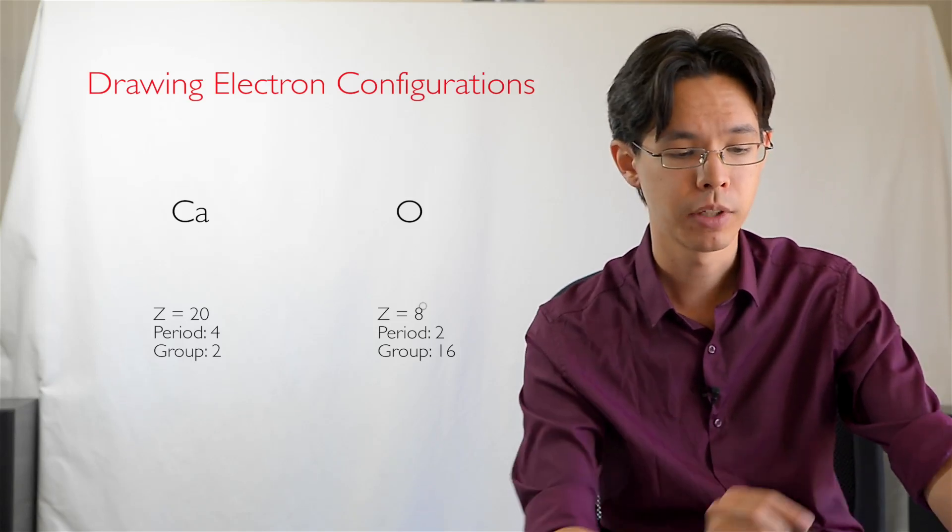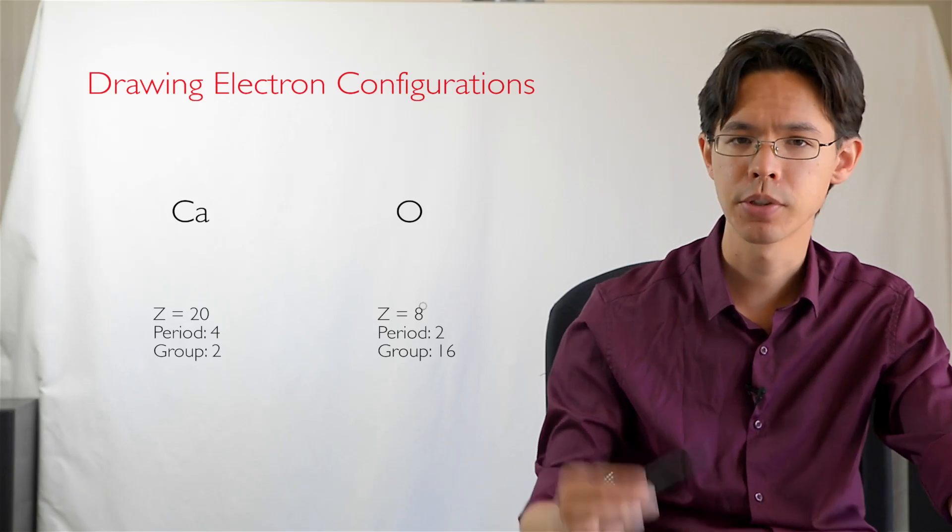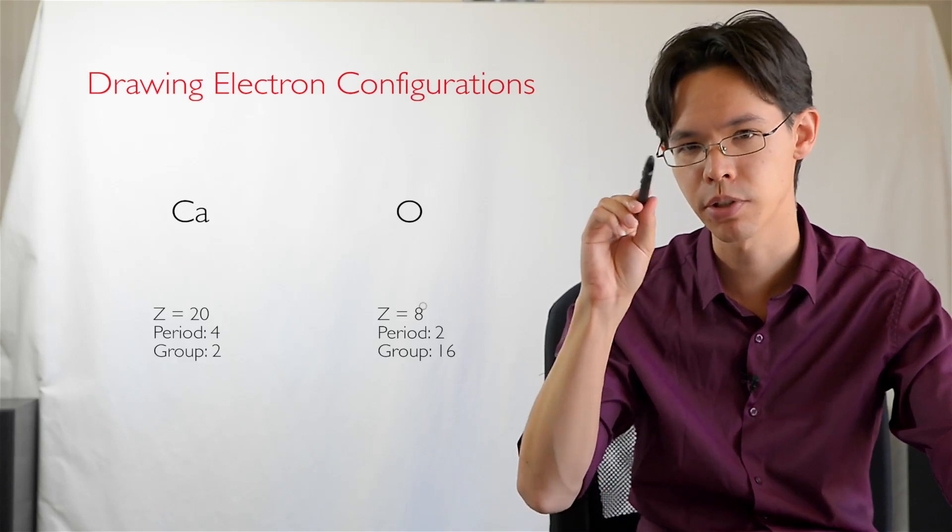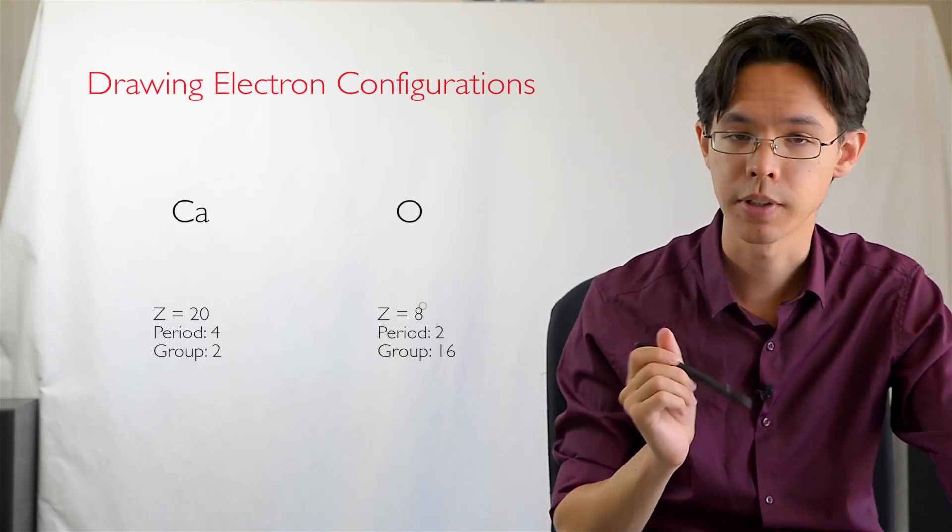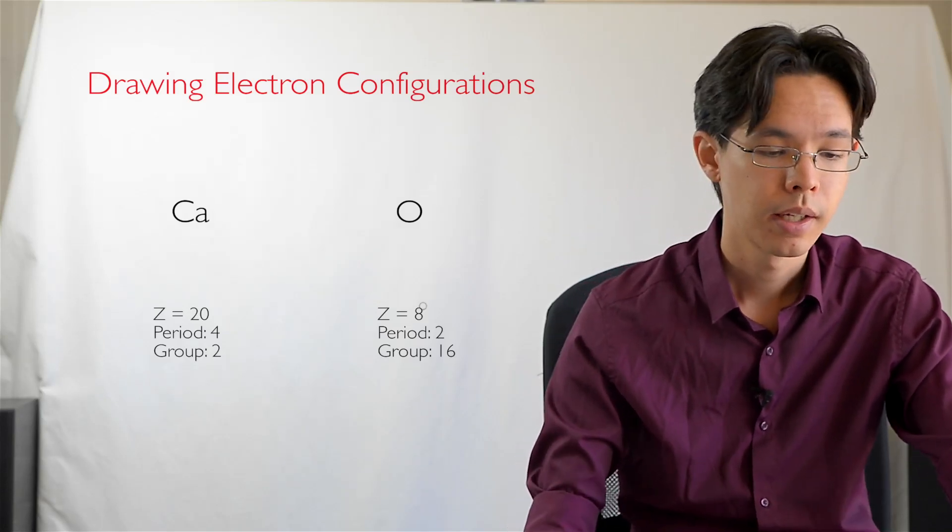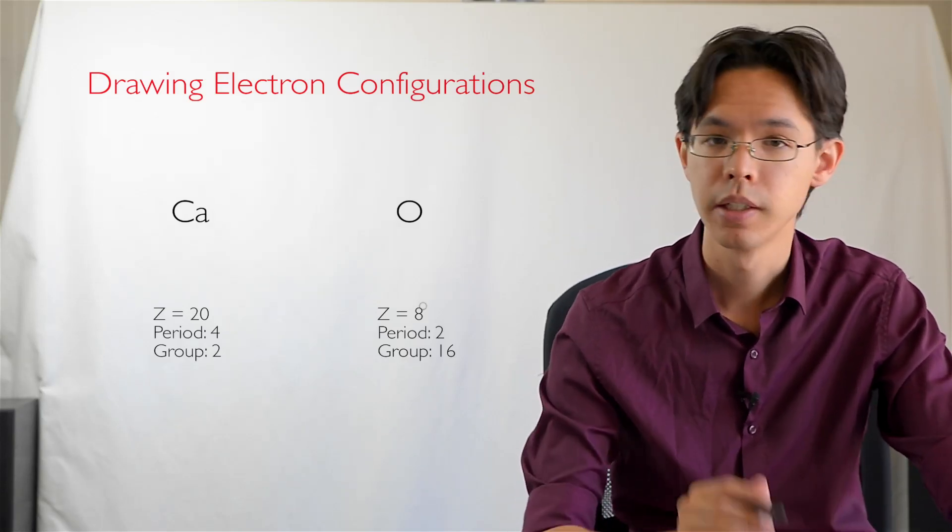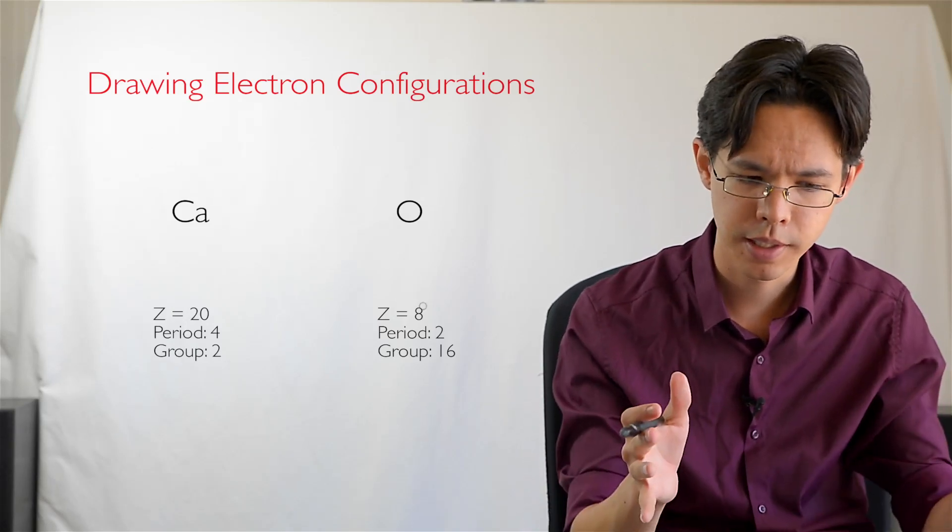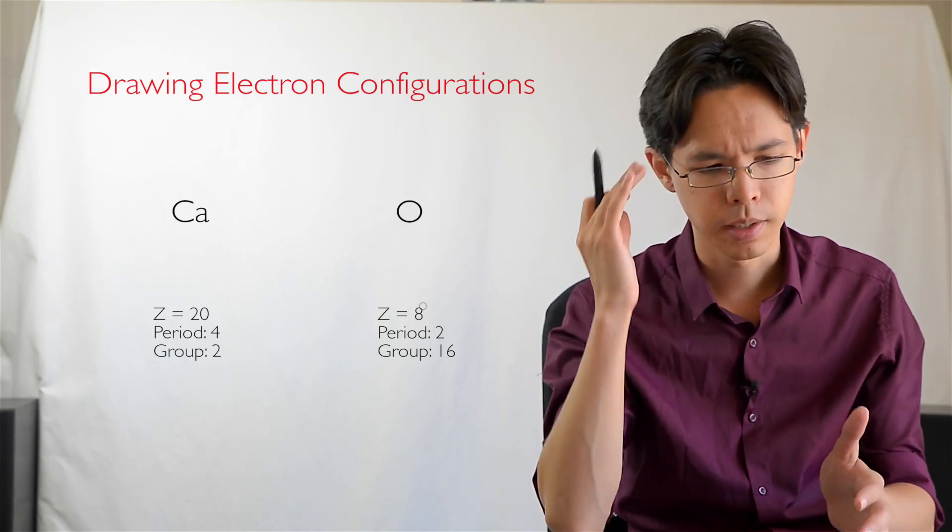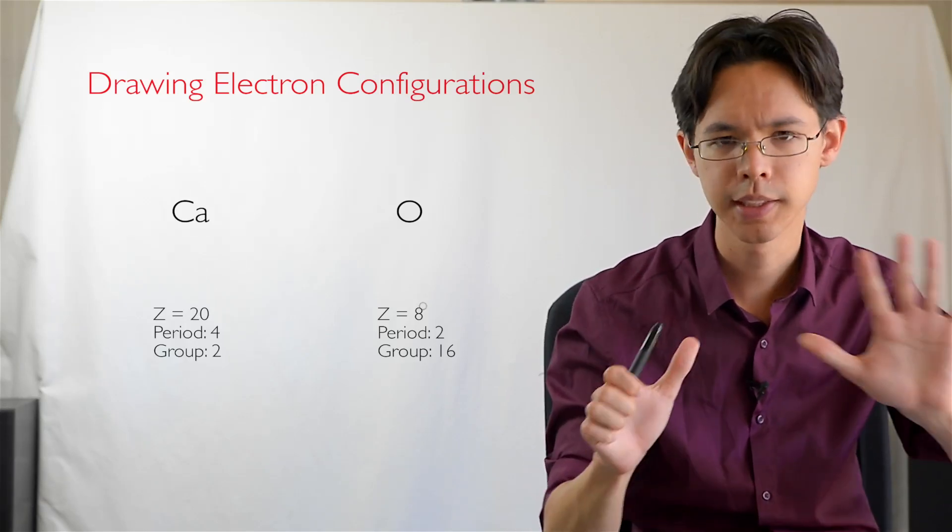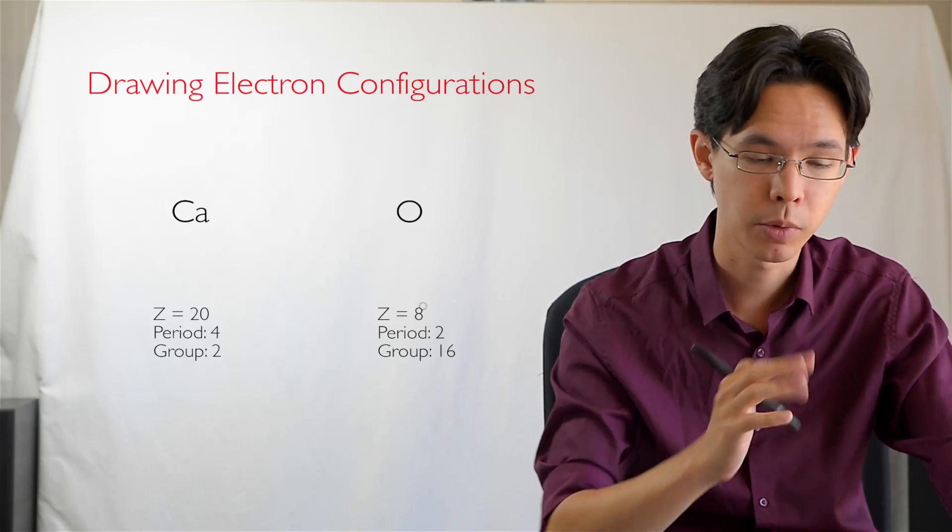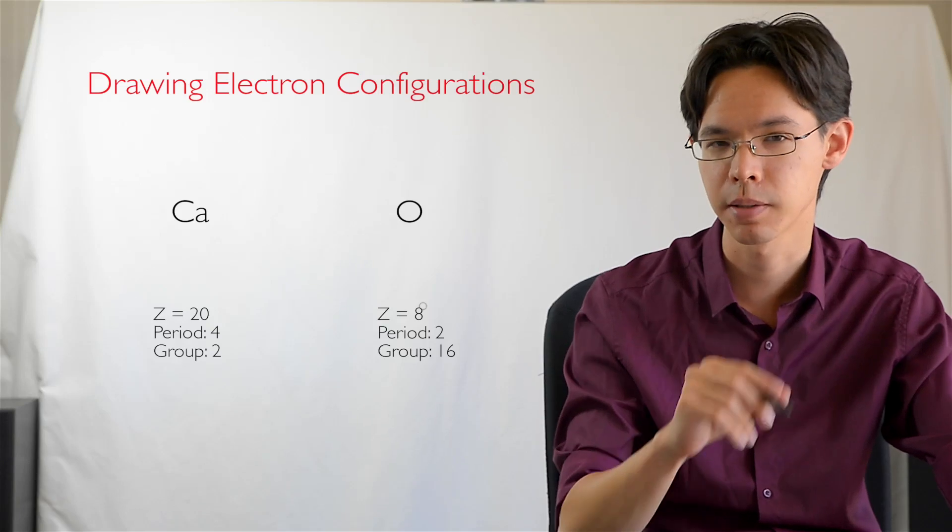More information we can find out from the periodic table is that it's in period 2, the second row. The period number tells you exactly how many electron shells there will be, and that's very helpful. Therefore it'll have two electron shells. We also get the group number, group 16. If we ignore the number 10 and see what's left over, then we can find out that it has six electrons in its outermost shell. So from that we can draw it quite easily without having to count them all the way through.